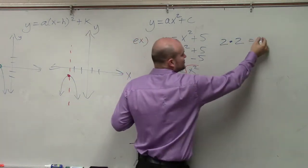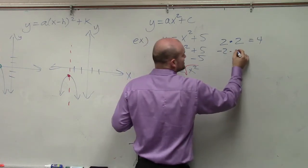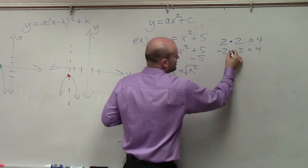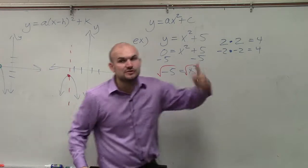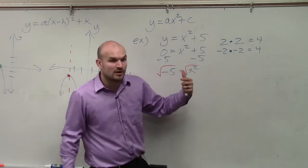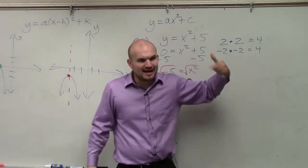2 times 2 equals 4. Negative 2 times negative 2 equals 4. And yeah, you could say negative 2 times 2 equals negative 4. But negative 2 and 2 are not the exact same.